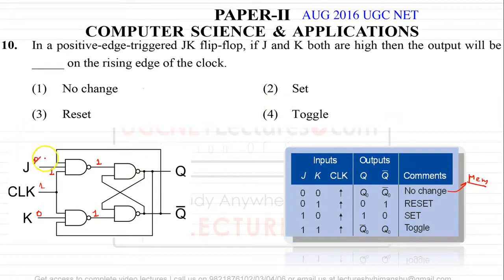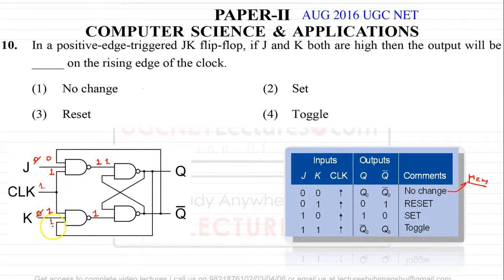Now let's take J equals 0 and K equals 1, with clock equals 1. Applying these values: 0 into 1 is 0, this becomes 1; then 1, 1 into 1 is 1, and this becomes 0. The resulting output is Q equals 0 and Q-bar equals 1. This state is called the reset state.